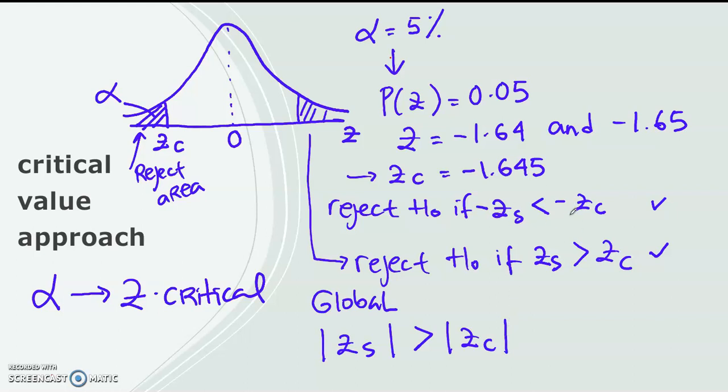You see how this can be used either for the left tail test or the right tail test. If it's a two tail, remember, you just need to divide your alpha into two, then convert it into a z-critical. I mean the z-value to get the z-critical.